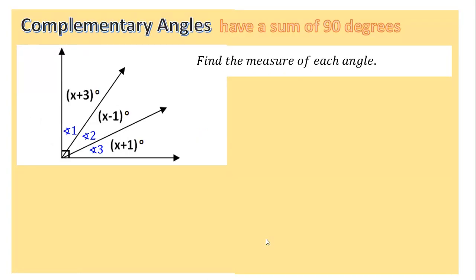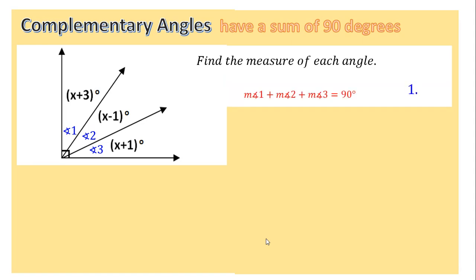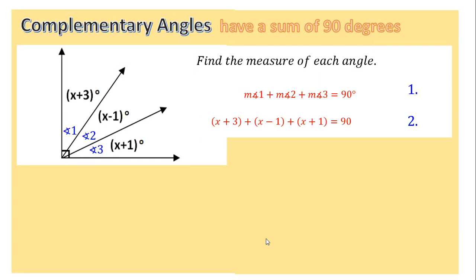Next is complementary angles, which have a sum of 90 degrees. Here we have three angles — angle 1, angle 2, and angle 3 — so the relationship is angle 1 plus angle 2 plus angle 3 equals 90 degrees. Angle 1 is x plus 3, angle 2 is x minus 1, and angle 3 is x plus 1. Add all of these together to equal 90 degrees.